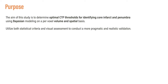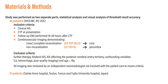We utilize statistical criteria and visual assessment to conduct a more pragmatic and realistic validation. This study was performed utilizing 57 patients, divided into two separate parts: a statistical analysis and a visual analysis. All patients presented with acute ischemic stroke. They underwent CT perfusion at the time of presentation and follow-up diffusion-weighted imaging 18 to 48 hours afterwards. Patients were divided into two groups: those that underwent complete or near-complete recanalization, TICI-2b or TICI-3, representing the core group; and patients who were not recanalized, TICI-0, representing the penumbra group. All imaging was reviewed by an independent neuroradiologist not involved with patient care to ensure accuracy.